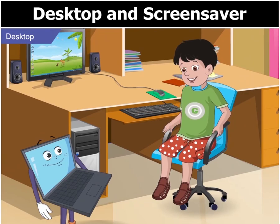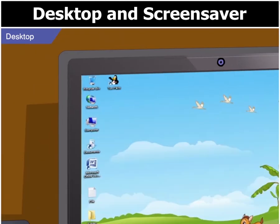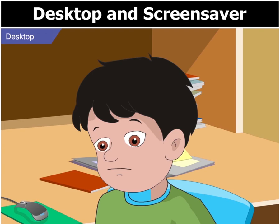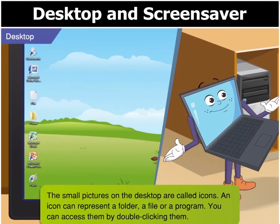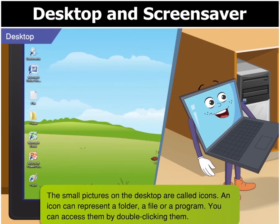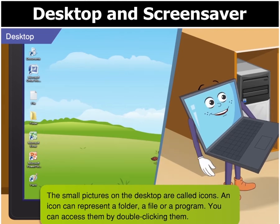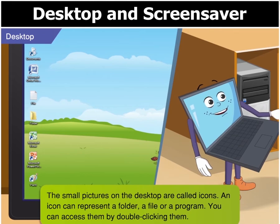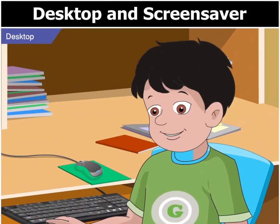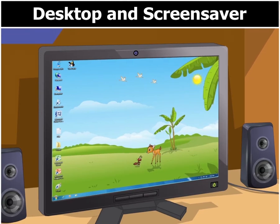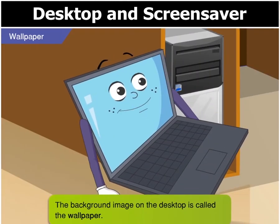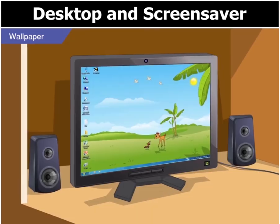Ok, now I remember. The desktop contains small pictures that have names. Goggle, can you tell me what these small pictures are called? The small pictures that you see on the desktop are called icons. An icon can represent a folder, a file or a program. You can open a folder, a file or a program by double clicking on their icons. But what is that big image in the background? The background image that you see on the desktop is called the wallpaper.